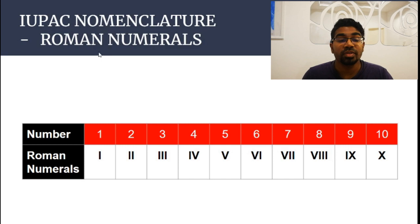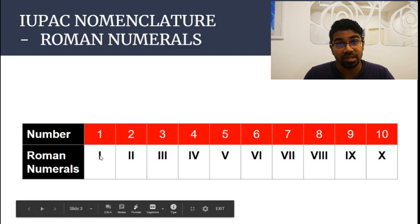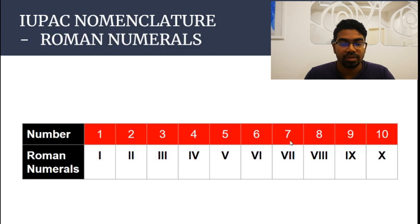Before we get to IUPAC nomenclature, you need to be familiar with Roman numerals. Roman numerals are just numbers written differently. For example, number one is written as I, and number two is II. The most commonly used ones are one, two, three, five, six, and seven.